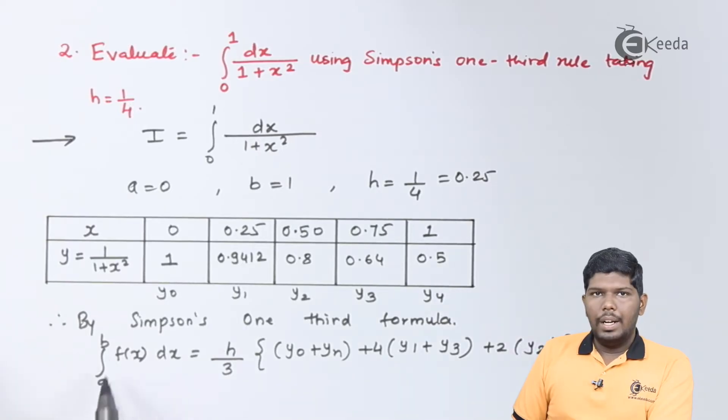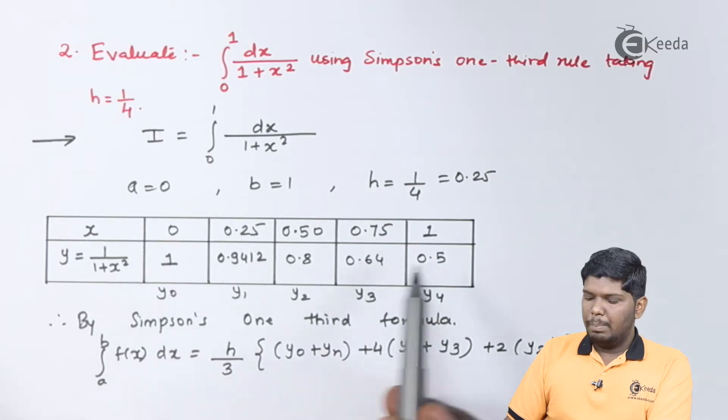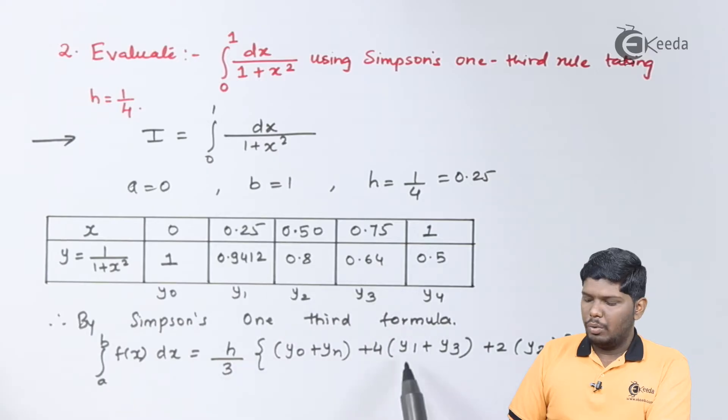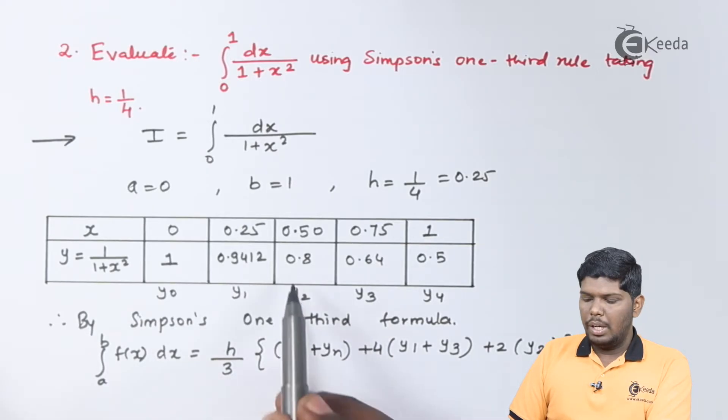Which is given by the formula integral a to b f of x dx is h by 3 into first term plus last term plus 4 into even positions y1 plus y3 plus 2 into odd position y2. Because we need to exclude first and last position so the odd position will be y2.